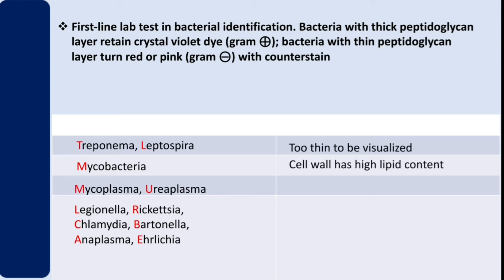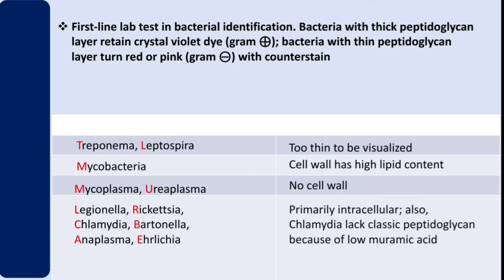Mycobacteria have a high lipid content in their cell wall. Mycoplasma and Ureaplasma have no cell wall at all. The remaining organisms — Legionella, Rickettsia, Chlamydia, Bartonella, Anaplasma, and Ehrlichia — are primarily intracellular. Also, Chlamydia lacks peptidoglycan due to low muramic acid content.